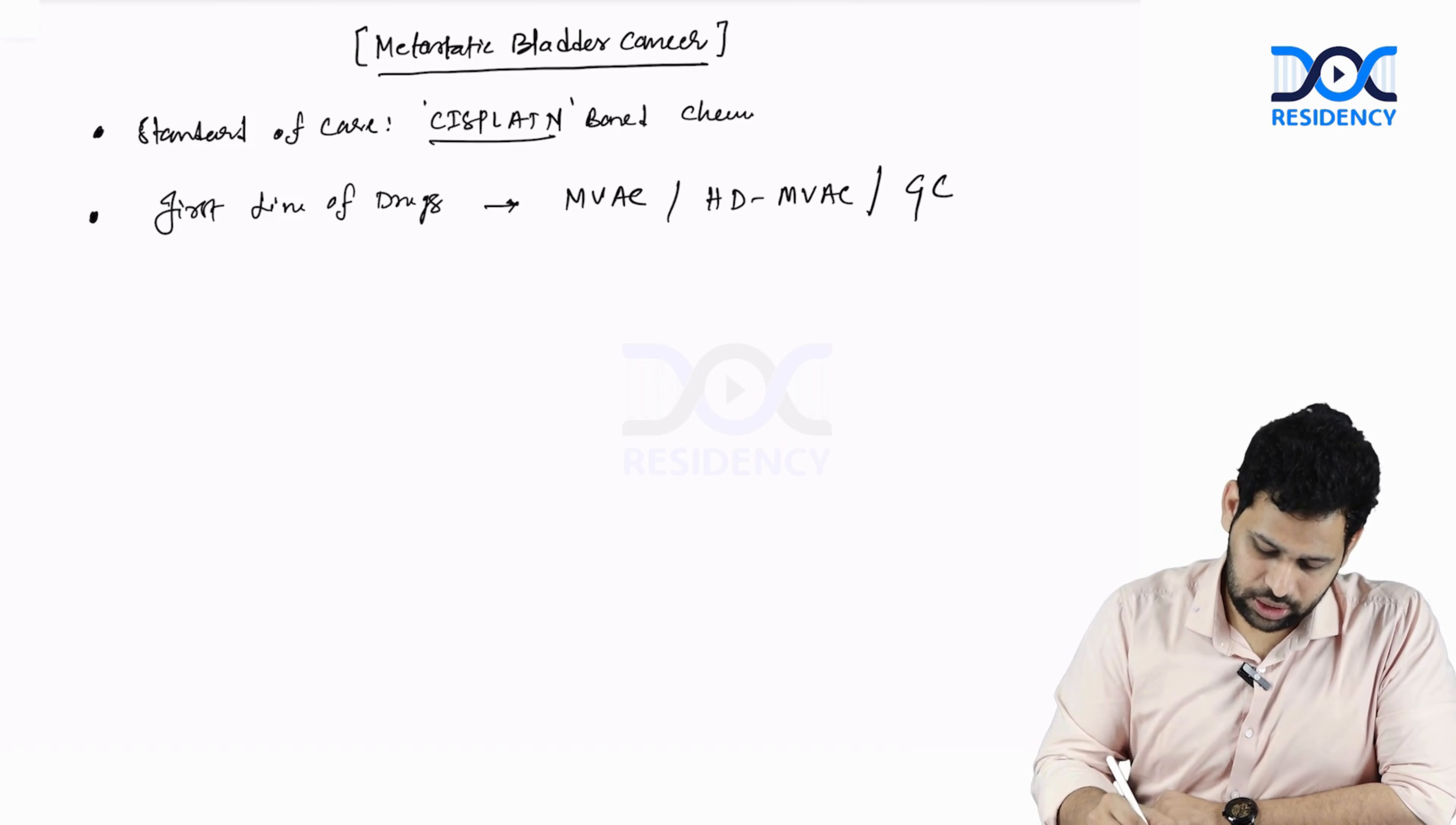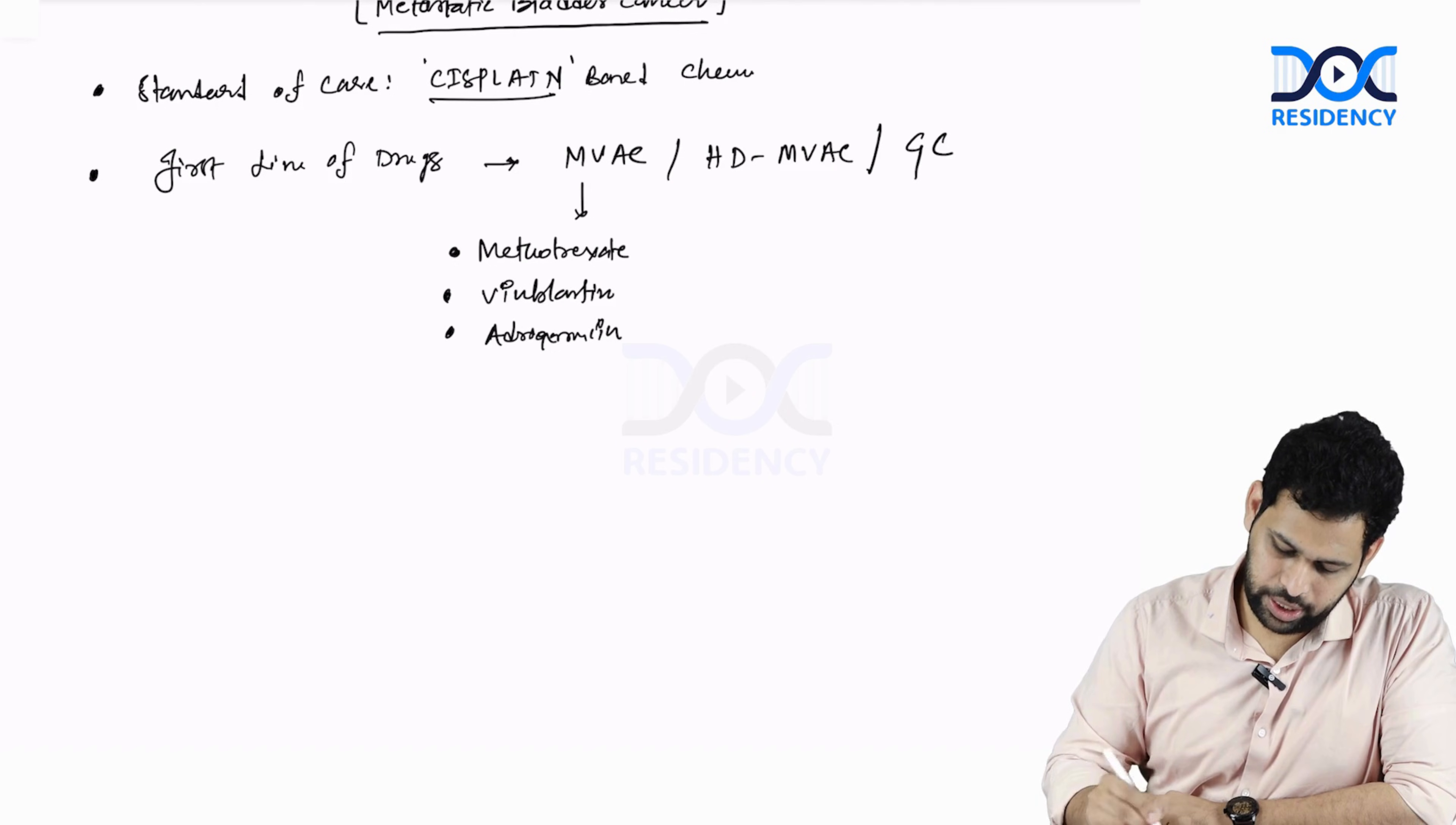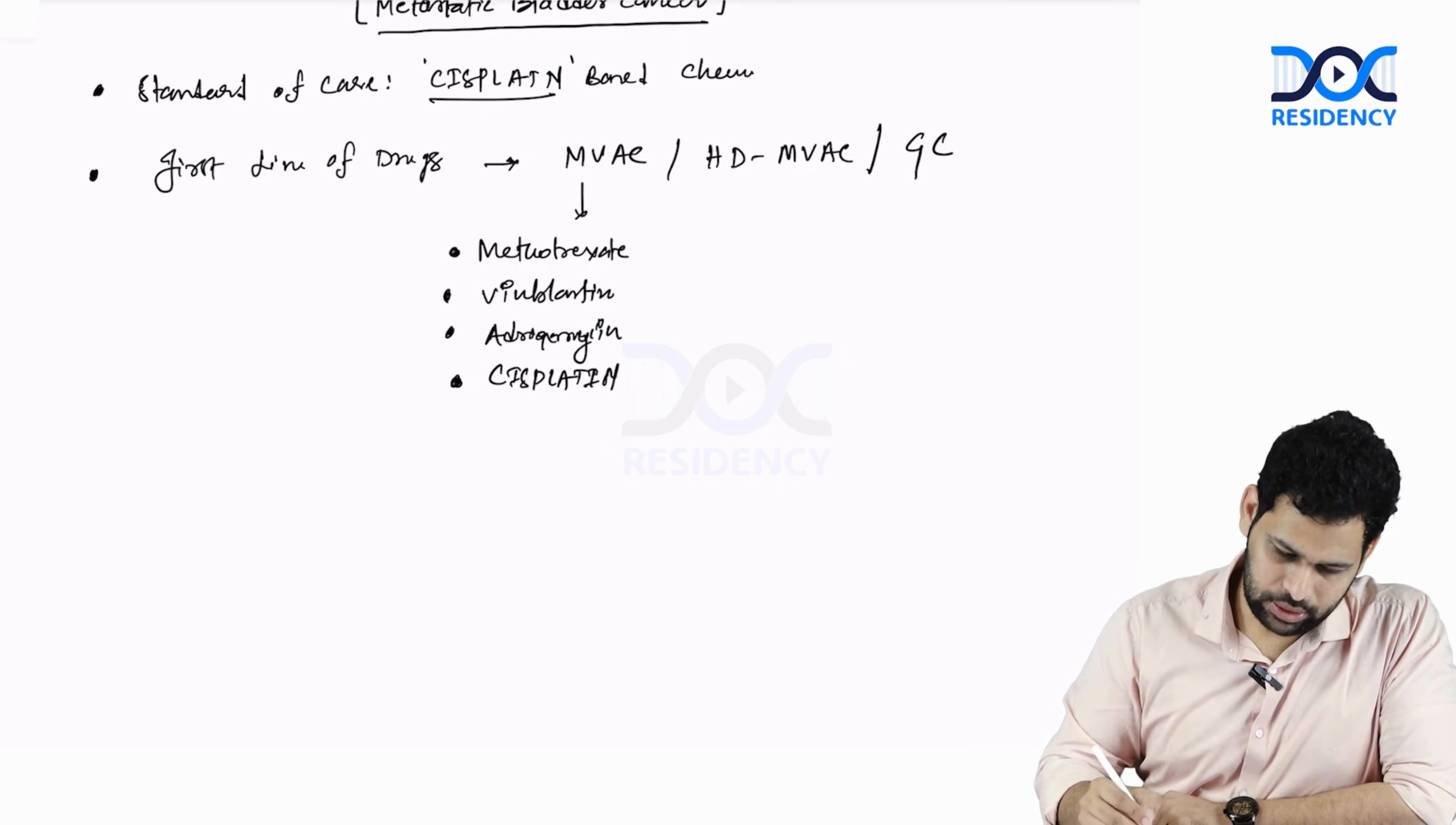The drugs in the MWAC regimen are methotrexate, vinblastin, adriamycin, also known as doxorubicin, and the main drug that is cisplatin. This is MWAC regimen.